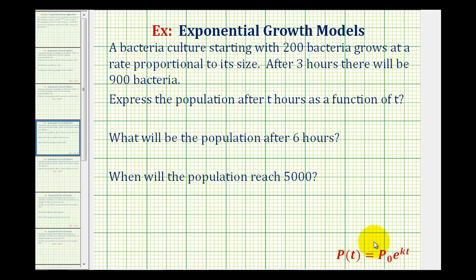We first want to express the population after t hours as a function of t. Then we want to find the population after six hours. Then we want to know when the population will reach 5,000. So let's start by finding the exponential function that will model the bacteria population.